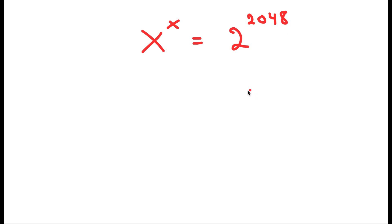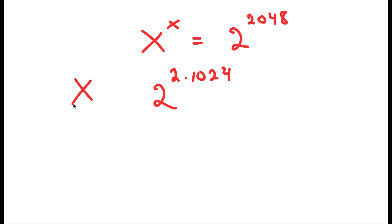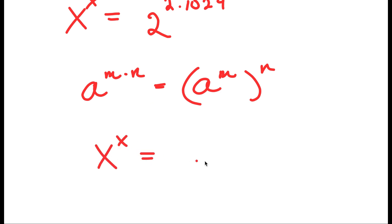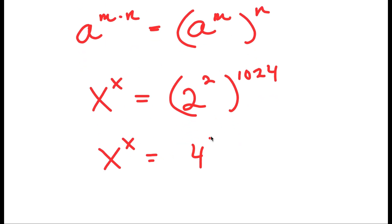In this video, I'm going to solve a challenging exponential equation: x to the power of x is equal to 2 to the power of 2,048. To solve this, I'll start by rewriting 2 to the power of 2,048 as 2 to the power of 2 times 1,024. Using the exponent property a to the power of m times n equals a to the power of m to the power of n, I rewrite this as 2 to the power of 2 to the power of 1,024, which equals 4 to the power of 1,024.